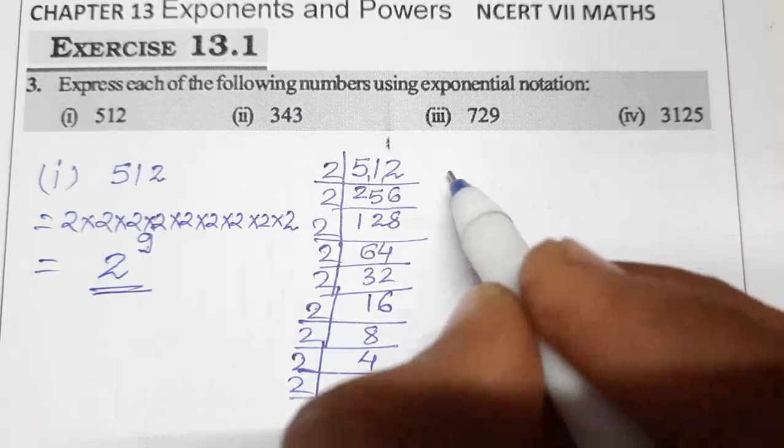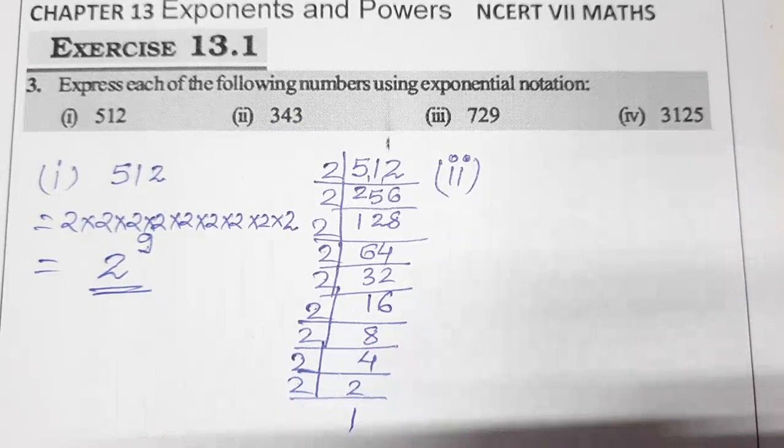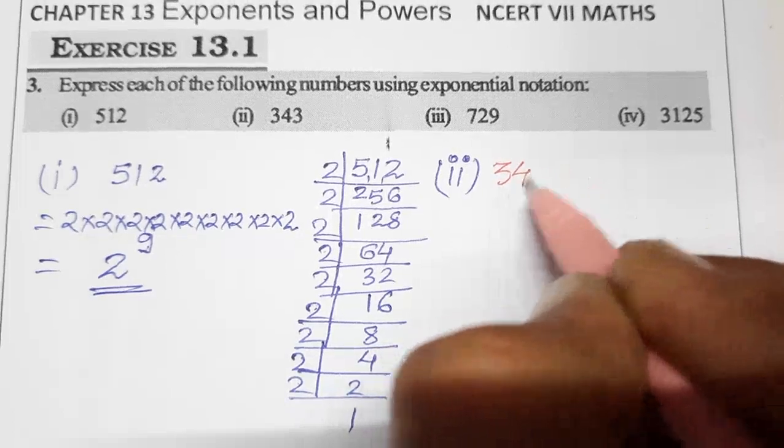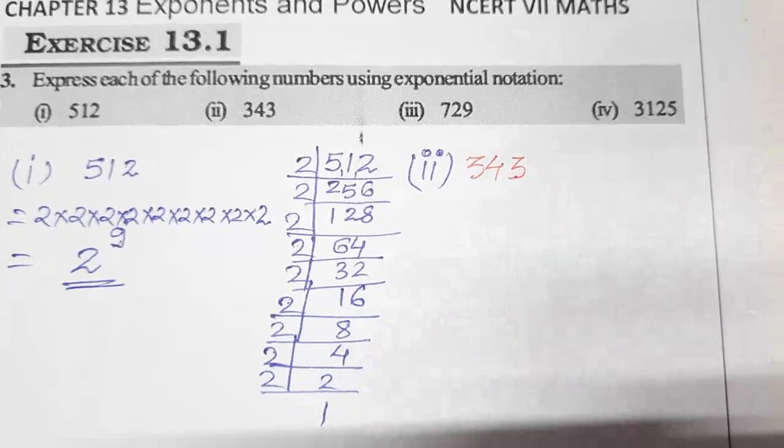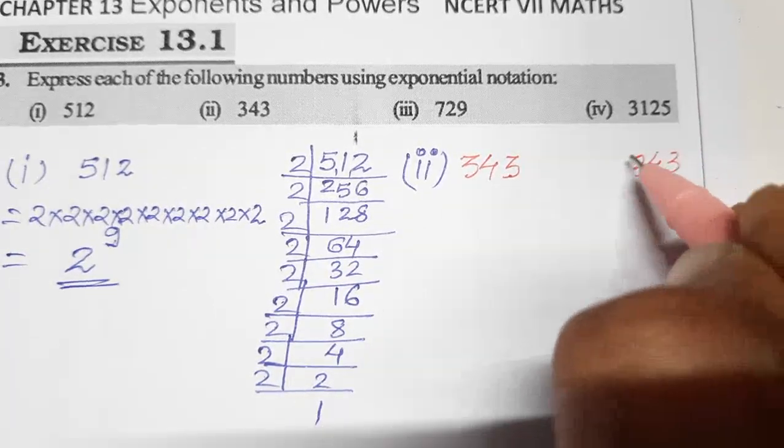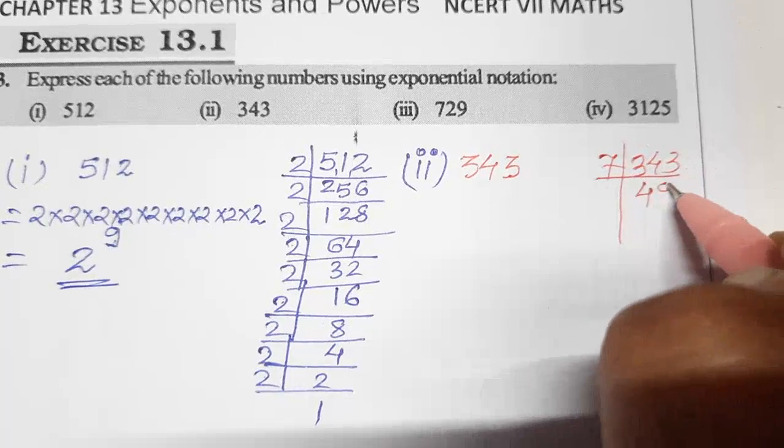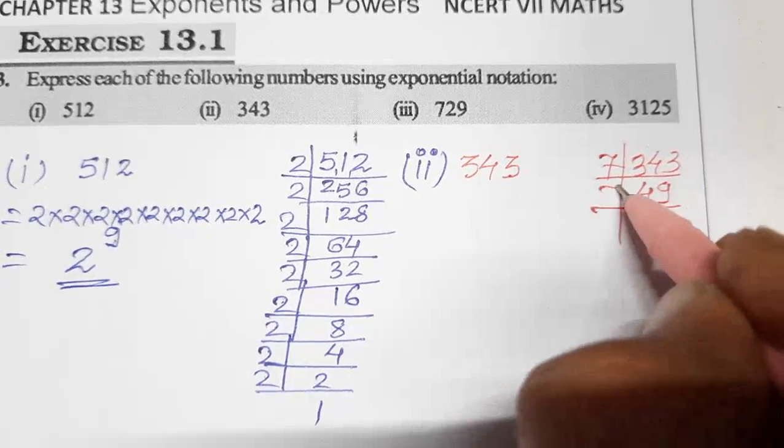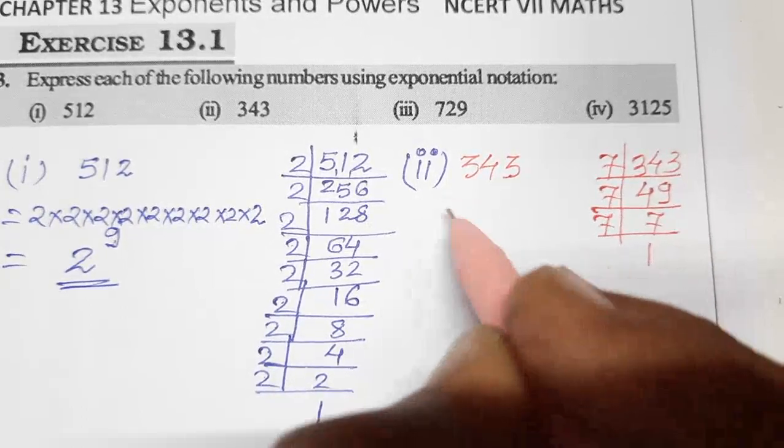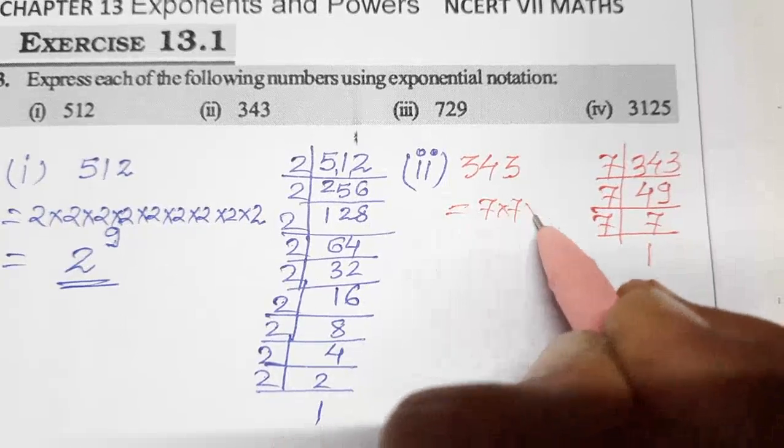Second one is 343. Let's do 343. We have to take prime factors. So let's take prime factors of 343. It is divisible by 7. 7 goes into 343 to give 49, then 7, then 1.